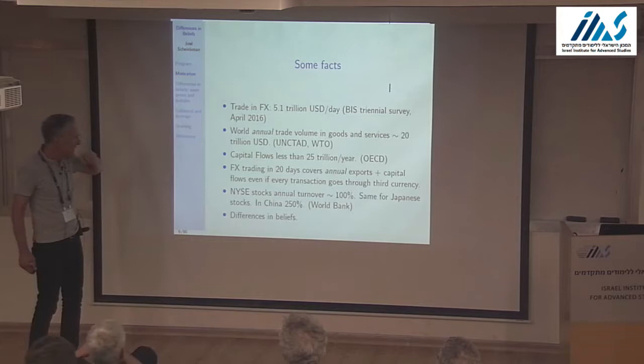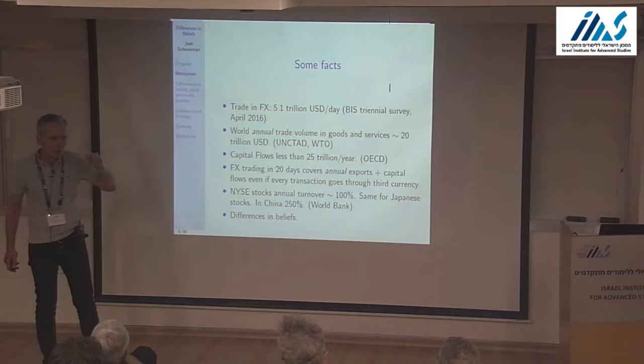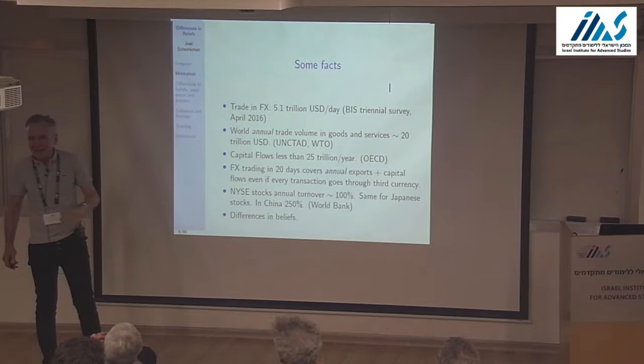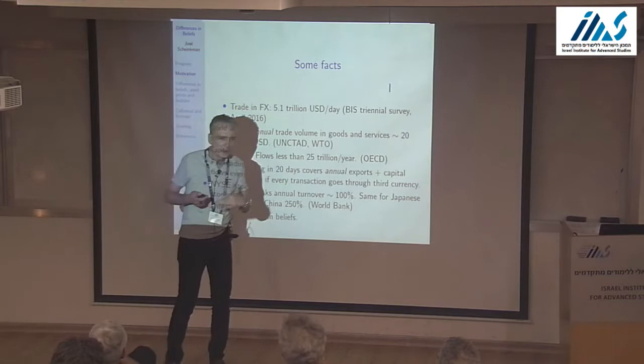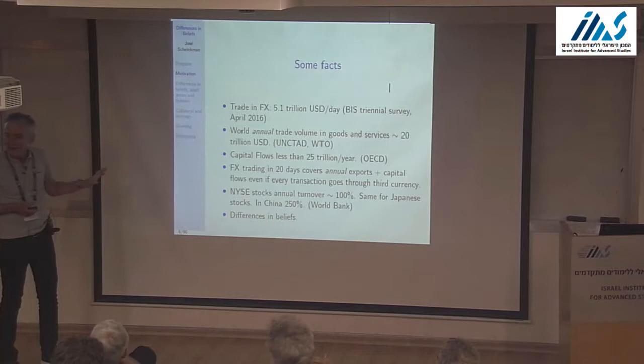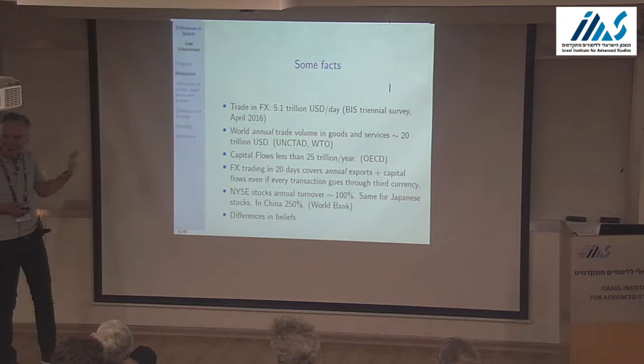Suppose you're a euro-denominated person importing from Japan and you go through the dollar. You still only get 20 days of FX trading to account for. So what are people doing the other 230 days? Less than 10% is explainable by fundamentals. Trying to explain this by liquidity shocks is ludicrous — people don't get liquidity shocks all the time.